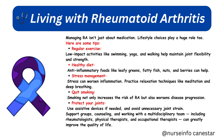A healthy diet rich in anti-inflammatory foods like leafy greens, fatty fish, nuts, and berries can help. Stress management is also important, as stress can worsen inflammation — practice relaxation techniques like meditation and deep breathing. Quitting smoking is essential, as smoking not only increases the risk of RA but also worsens disease progression.